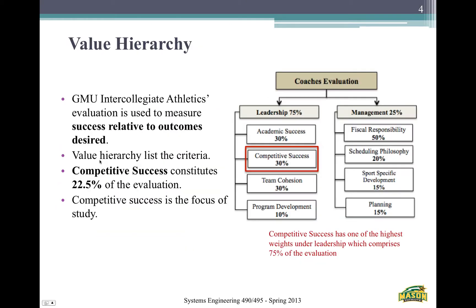With all this stress on competitive success throughout Division I sports, this is how George Mason Intercollegiate Athletics evaluates their coaches. The breakdown in their coaches' evaluation is based on two groups — leadership and management — which are broken down further. We wanted to focus on competitive success because this is what the coach has the most control over, and it is weighted at 22.5% of the entire evaluation.